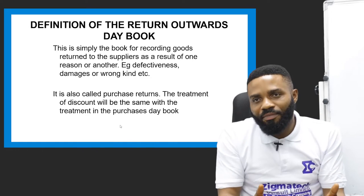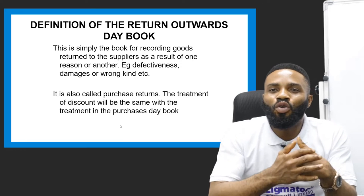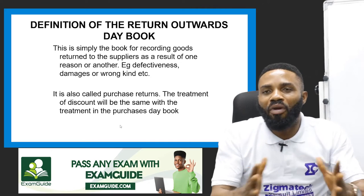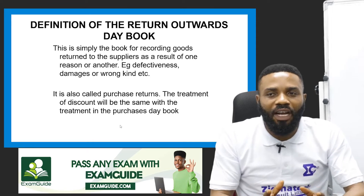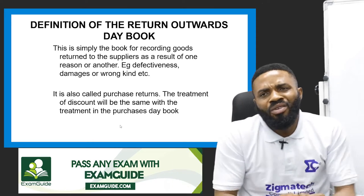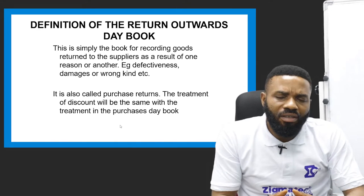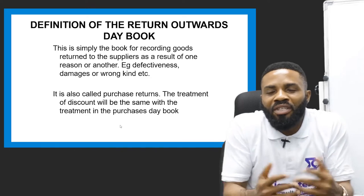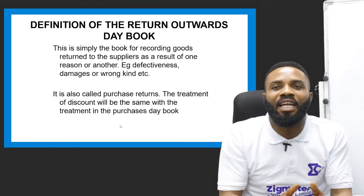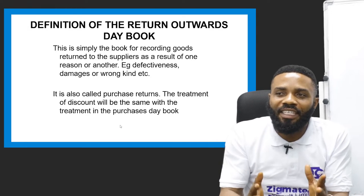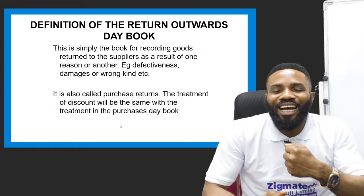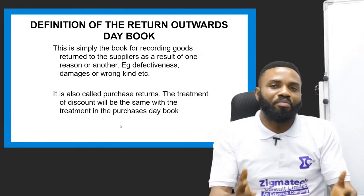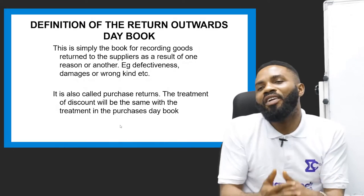Some other time goods can be damaged in the process. For example, if you are dealing in breakable items and while taking the items to the shop you discover that some have broken, you can't sell them — you have to return them to the seller. These are called damaged or perishable items. You paid for these items and upon bringing them to the shop, you discover they could not withstand the stress of transportation from the supplier's location to your business.